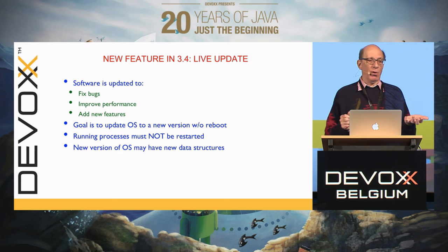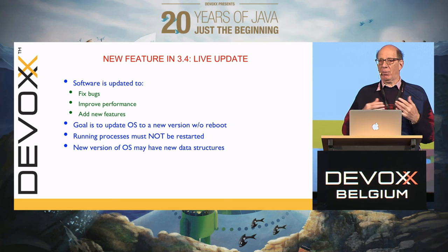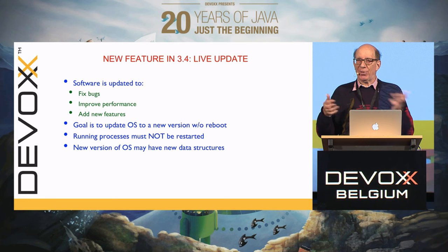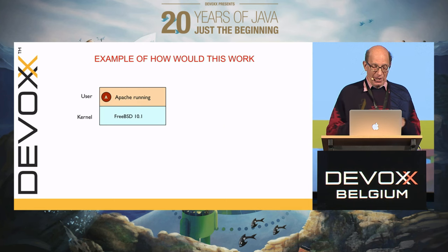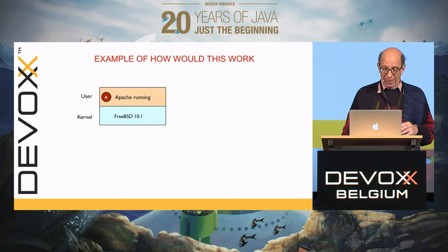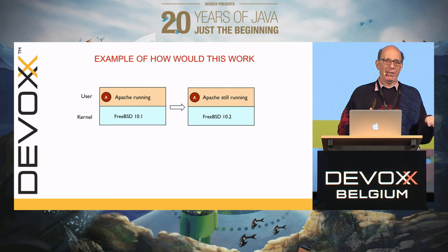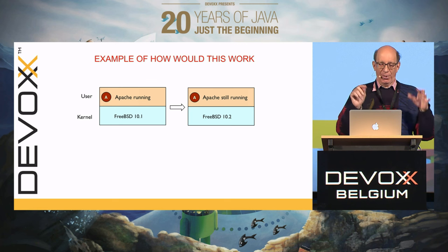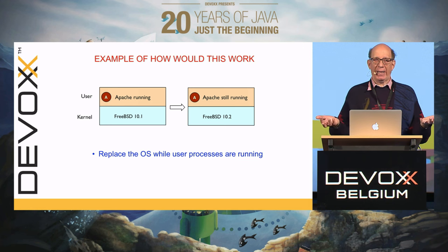The new operating system may differ from the old one in its internal data structures, and there's a lot of information in those — the file system has file descriptor tables and inode tables that can't be lost. For example, Apache is running on FreeBSD 10.1 and we want it to still be running on FreeBSD 10.2 after we change the operating system. We want to replace the operating system while user processes and long-running servers are running, with no reboot.